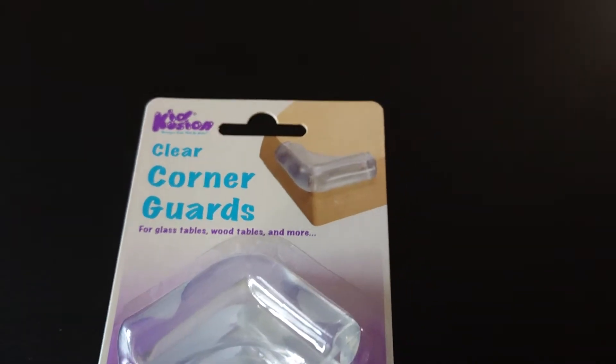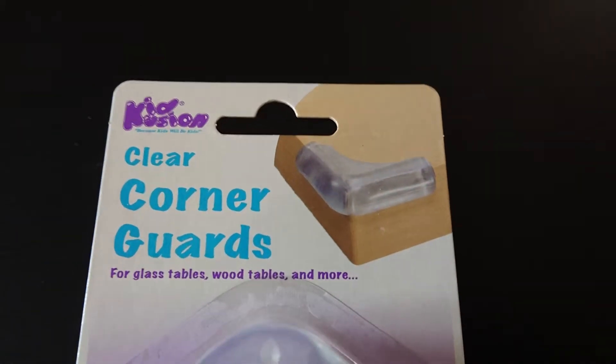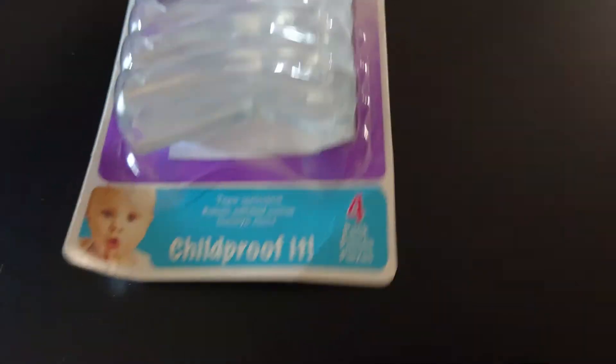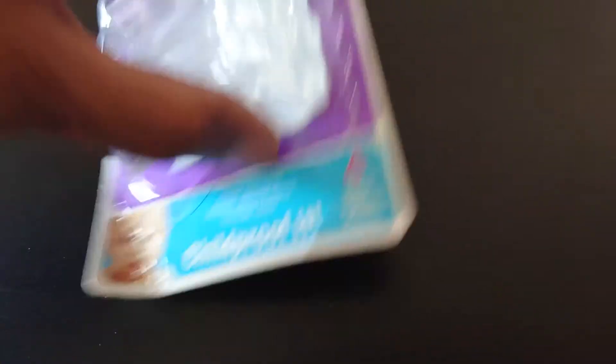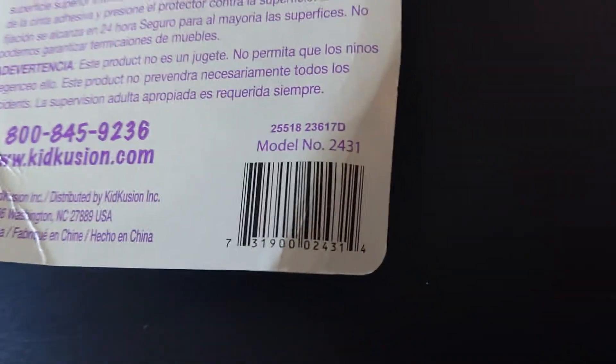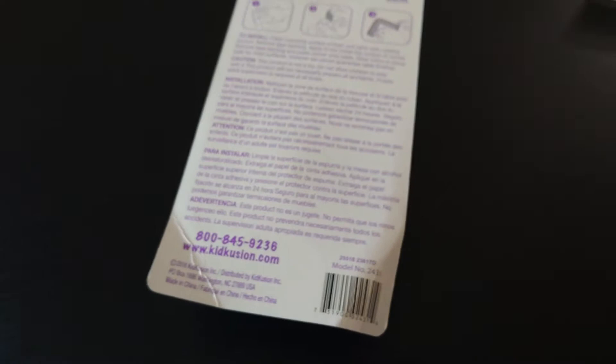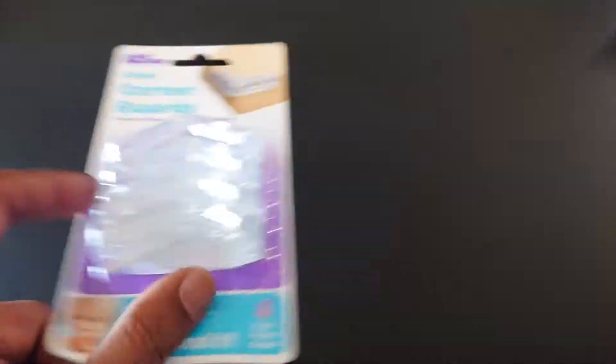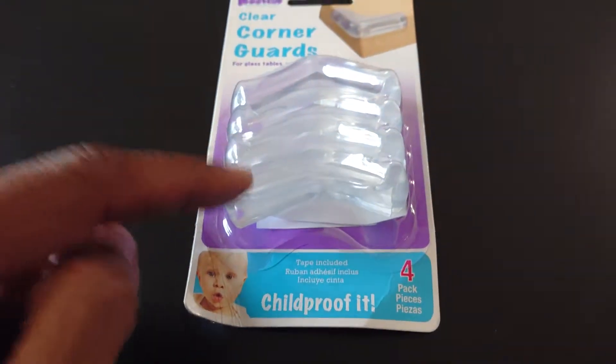Clear corner guards from KidCushion products. This is model number 2431. There's a barcode. I got it from Lowe's and it contains four parts for four corners of a table.